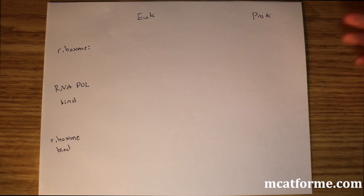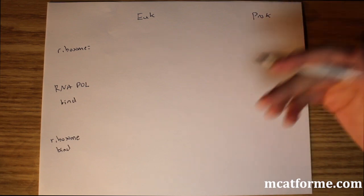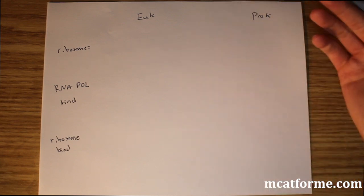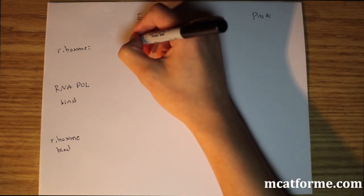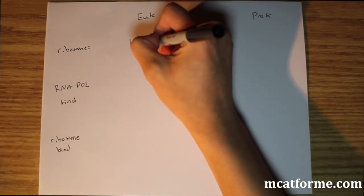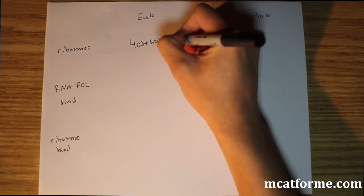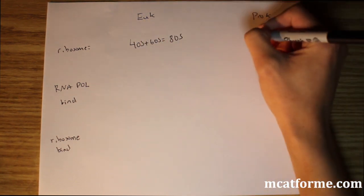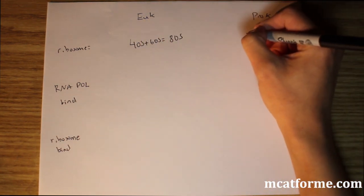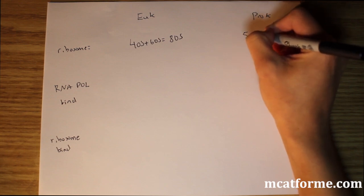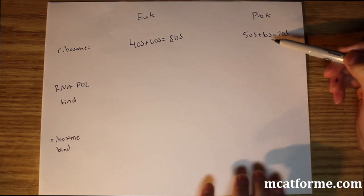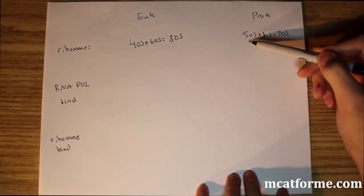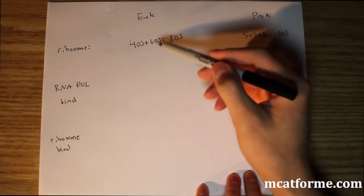The last things are ribosomes. Ribosomes are made of two components. What are those in eukaryotes and prokaryotes? In eukaryotes, it's 40S and 60S, which makes 80S total. In prokaryotes, it's 30S and 50S, which equals 70S. The smaller subunit is 30S and the bigger is 50S, and likewise 40S and 60S.